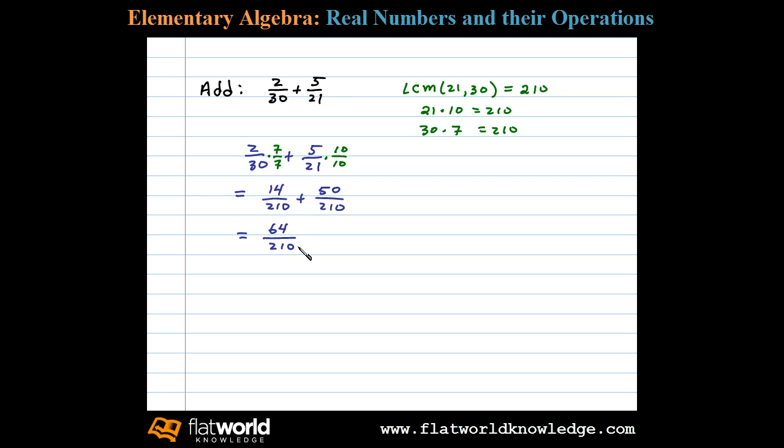reduce. We notice 2 divides into both the numerator and the denominator, so as the last step we can reduce here. And that gives us the final result: 32 over 105.